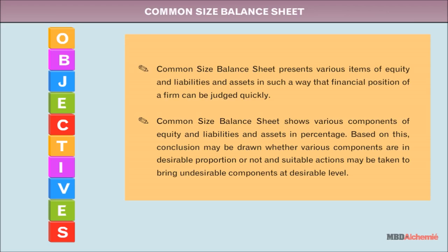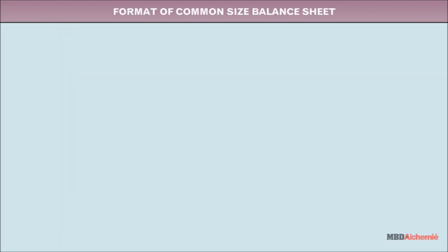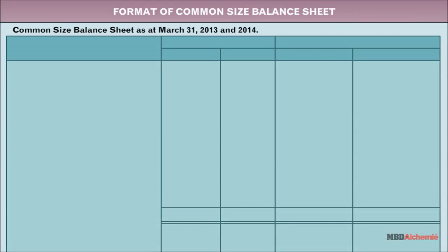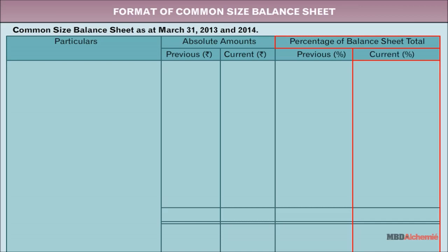Suitable actions may be taken to bring undesirable components to a desirable level. The format of common size balance sheet has five columns: the first displays particulars, the second displays the amount of the previous year, the third displays the amount of the current year, the fourth displays the percentage of balance sheet total of the previous year, and the fifth displays the percentage of balance sheet total of the current year for a specific item.